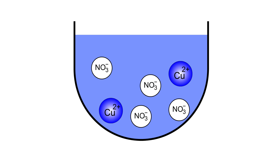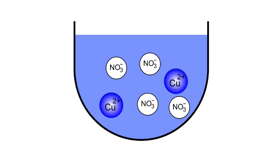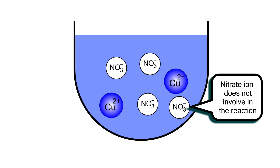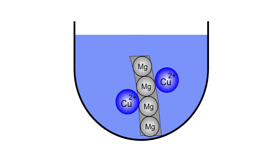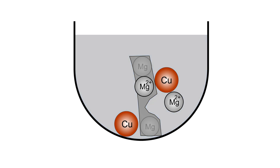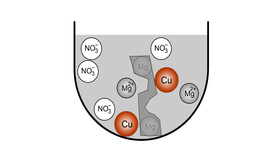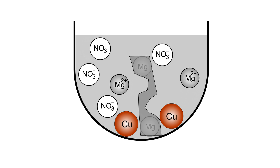The blue copper two nitrate solution contains copper two ions and nitrate ions. Nitrate ions are spectator ions that are not involved in the reaction and are ignored. Magnesium donates two electrons to copper two ions, producing magnesium ions and copper metal. Copper metal can be seen as a brown deposit in the test tube. The blue color of the solution becomes less intense. Magnesium dissolves into the solution and becomes thinner, and magnesium nitrate solution is produced.